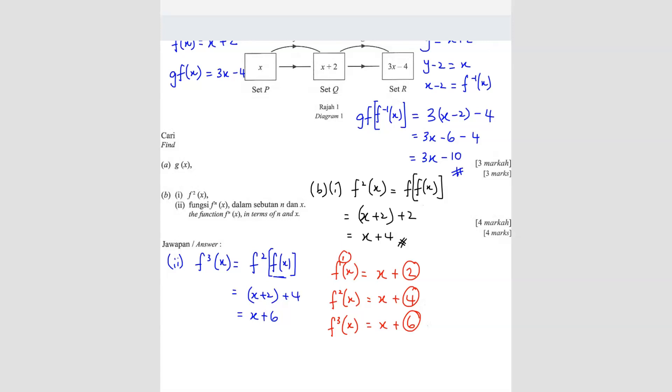The number here changes based on the power here, right? If power 1, you take this power times 2, you get 2. If the power here is 2, you times 2, you get 4. If the power here is 3, you times 2, you get 6.